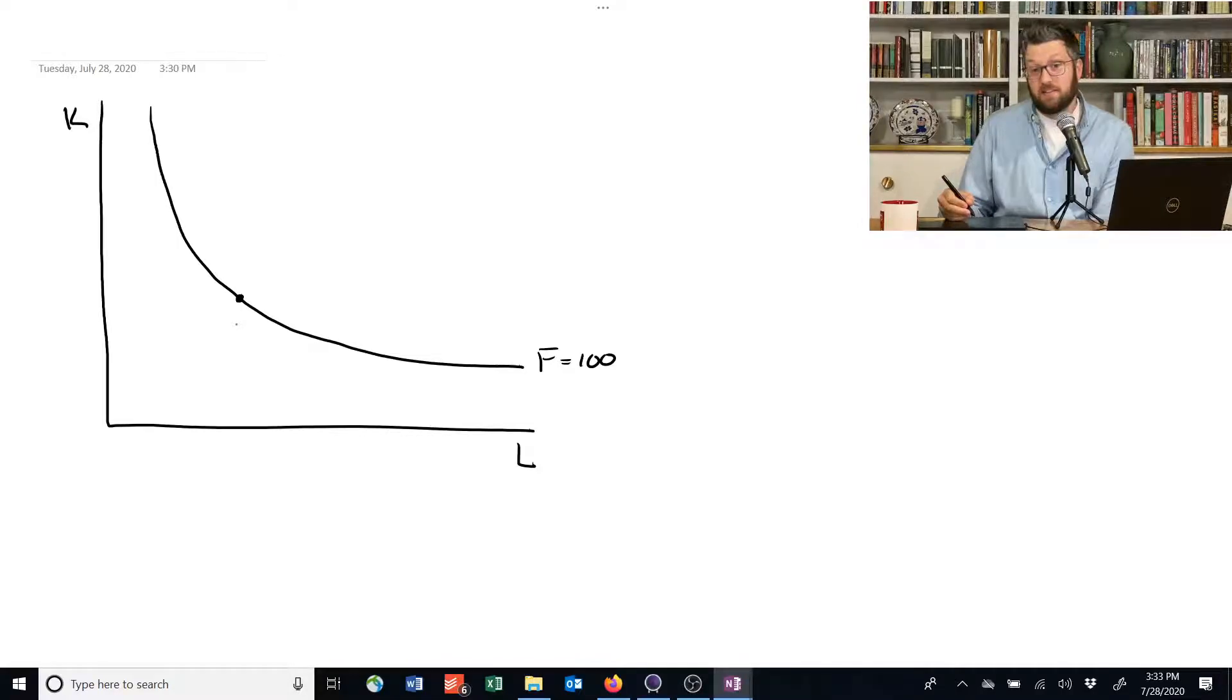Now, one of the colonists gets sick and can't work. Suddenly, we're down on our labor, and so we fall off this isoquant down to here. And this is going to be at some point below this isoquant.